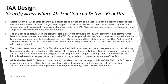Abstraction in a TAA enables technology independence, in that the same test suite can be used in different test environments. That means it can include different target dependencies or have different technologies which can be adapted, and it can be portable to different environments as well. This is where we try to create an automation framework in such a way that it can be exported and moved to another environment or another setup, which will obviously be beneficial.